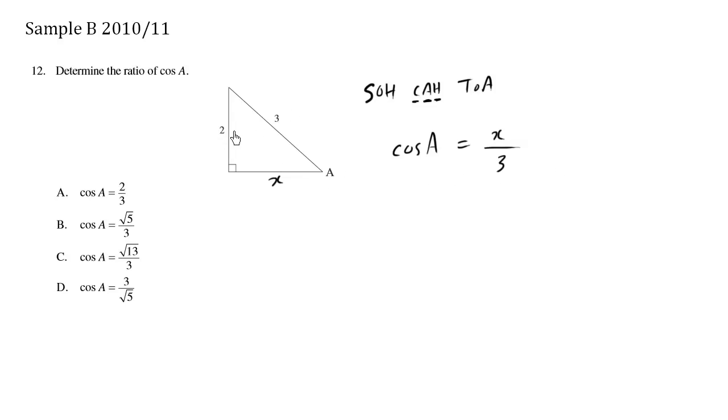When we have two sides of a right-angled triangle, we can use the Pythagorean theorem to solve for the third side. This here is the hypotenuse, so c squared, c being the hypotenuse, equals a squared plus b squared.